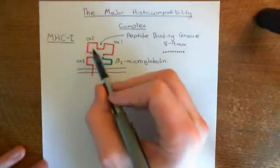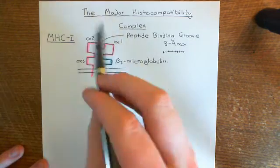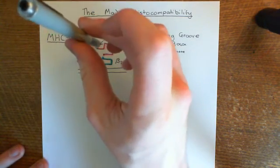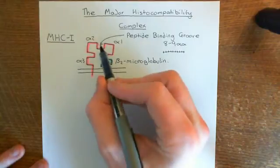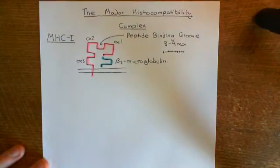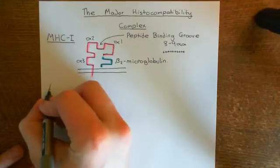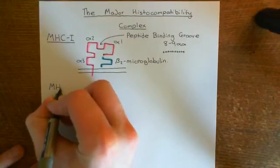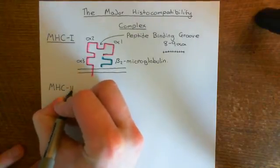This is a cross-section, if you like. So the peptide will actually be laid in the axis coming out of the board. I'll draw a picture that'll make that clearer in a moment, after we've just discussed the structure of the Major Histocompatibility Complex Class 2.